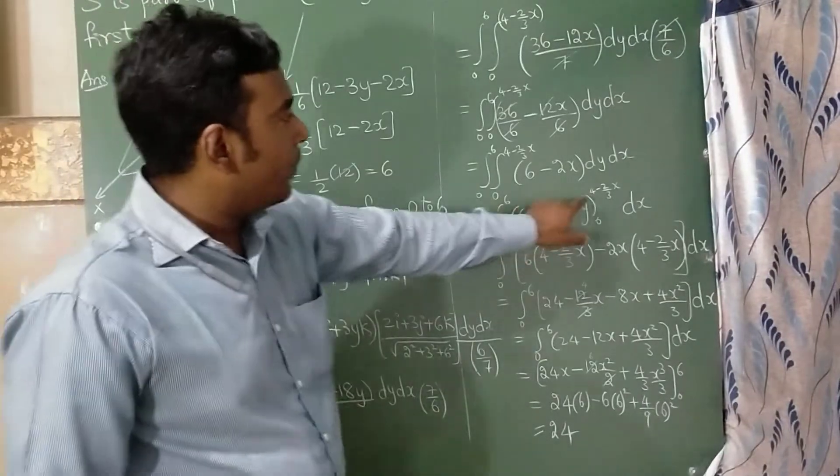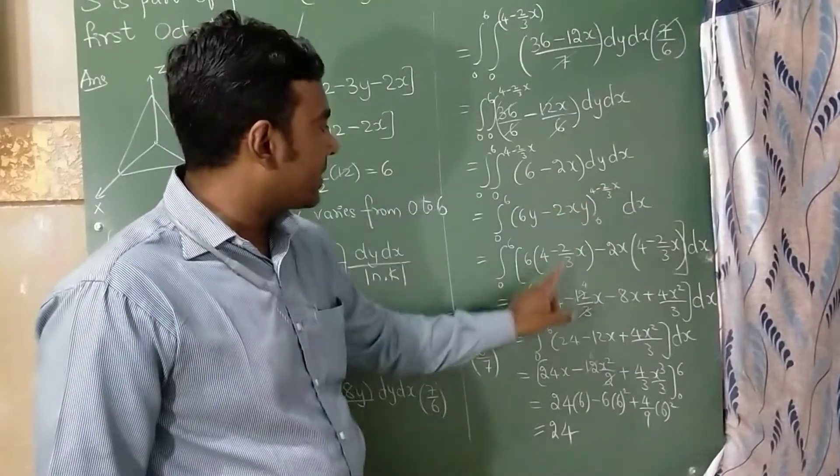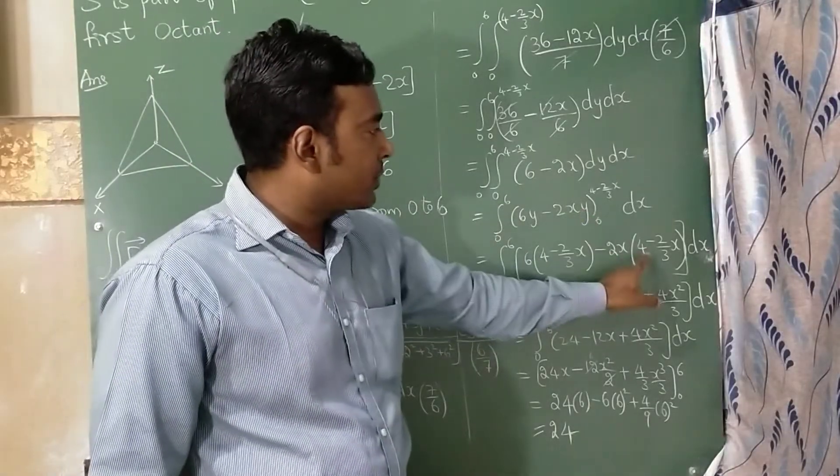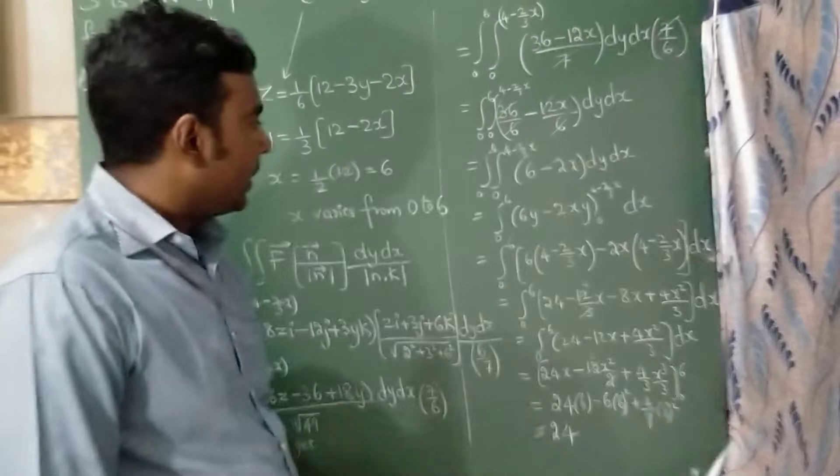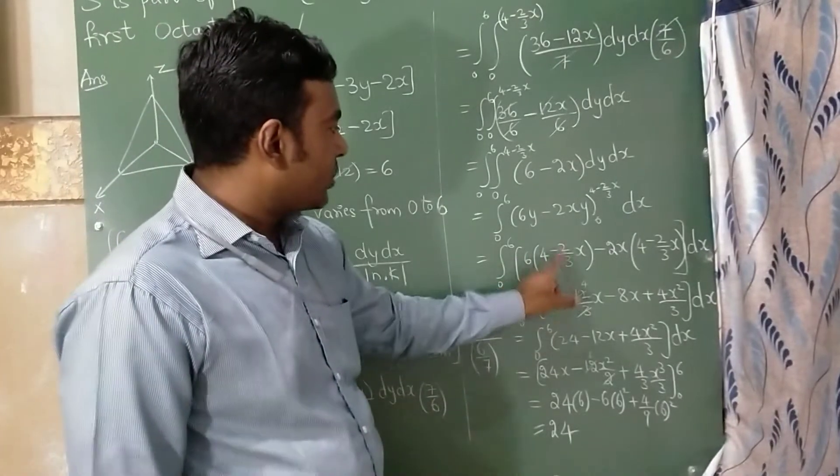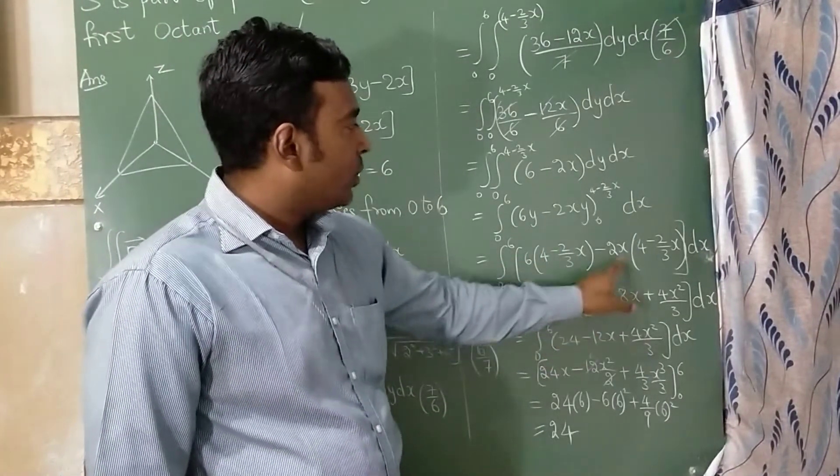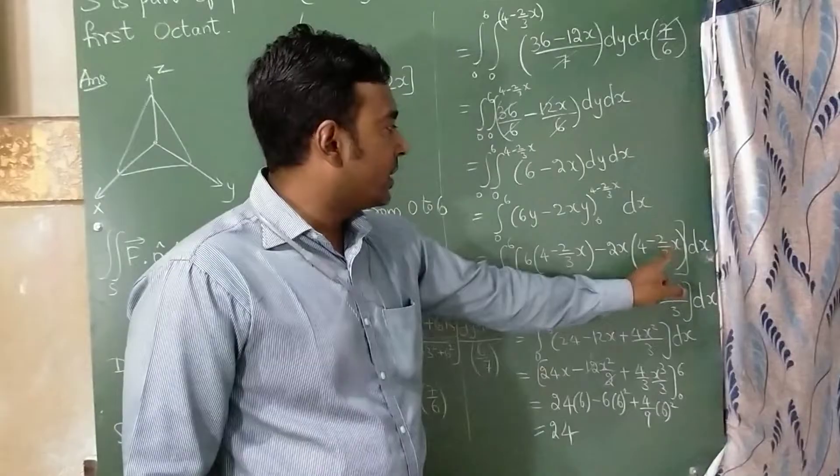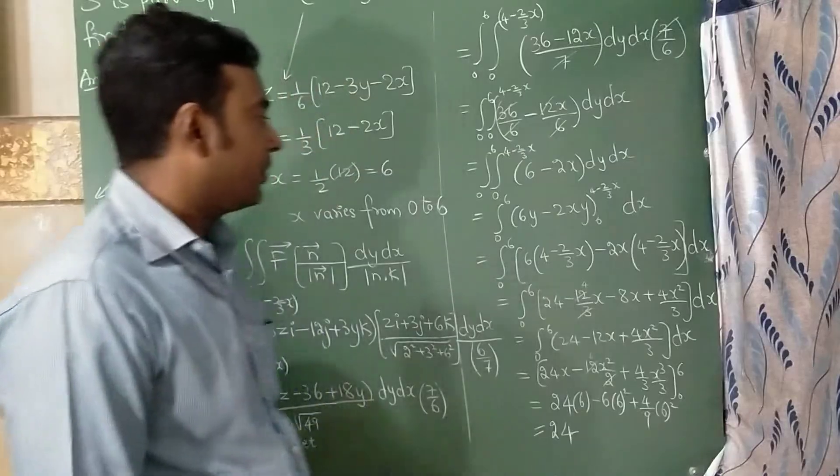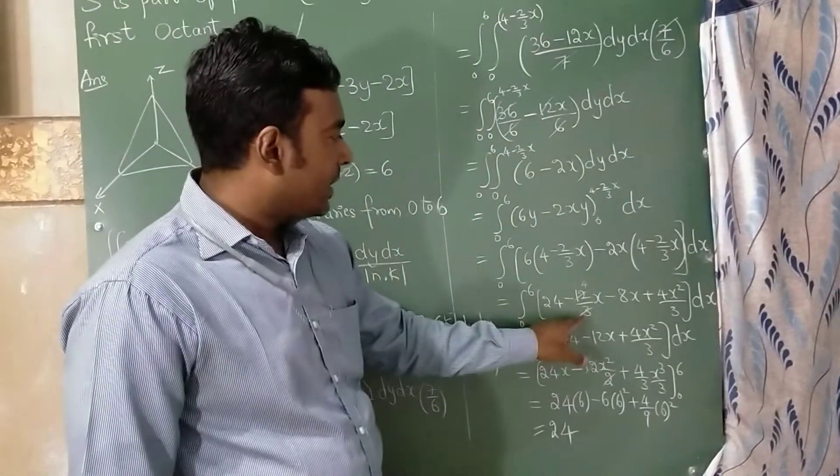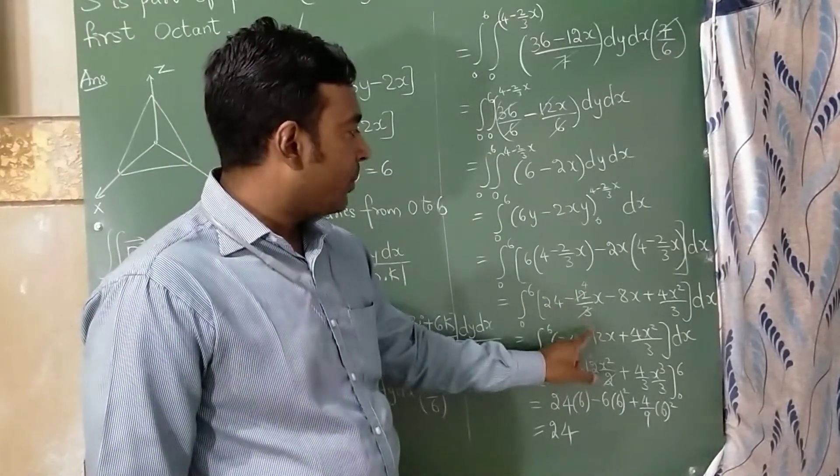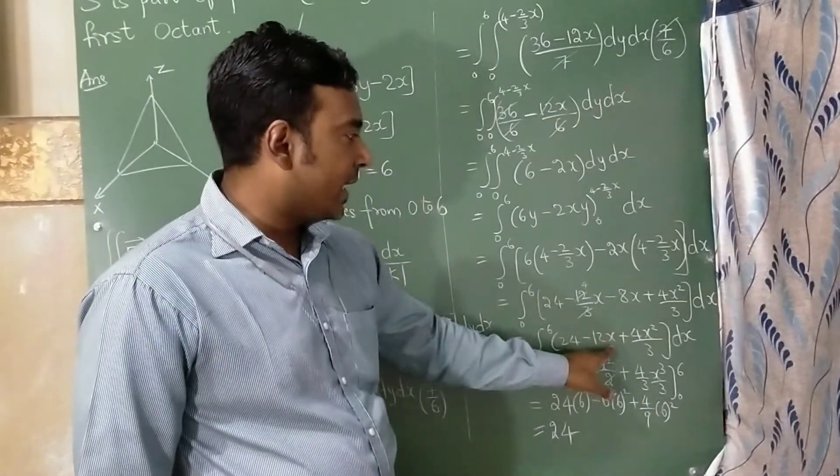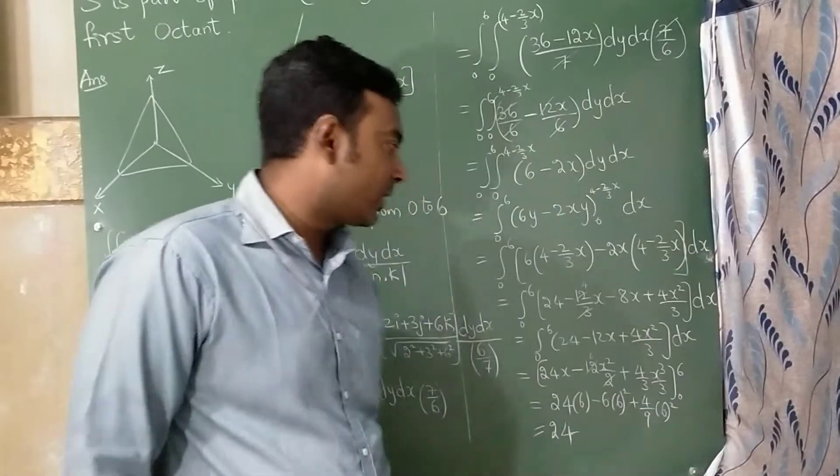Now where there is a y, I am going to substitute 4 minus 2 by 3 x. So I have substituted here minus 2x in place of y. I am substituting 4 minus 2 by 3 x. Now 6 times 4 is 24, 6 times 2 is 12 upon 3, minus 2 times 4 is 8x, minus into minus is plus, 2 times 2 is 4x into x is x square upon 3. Now 24 as it is, 3 times 1 is 3 times 4, so minus 4x minus 8x will become minus 12x plus 4x square upon 3 I have written here.